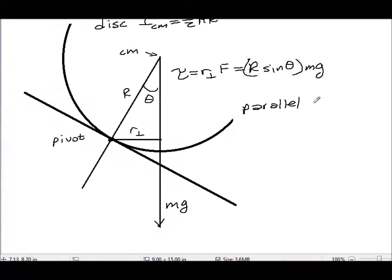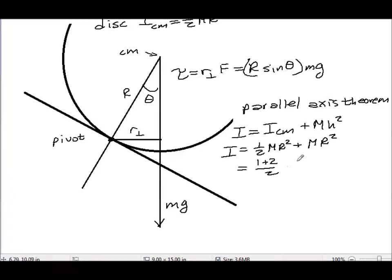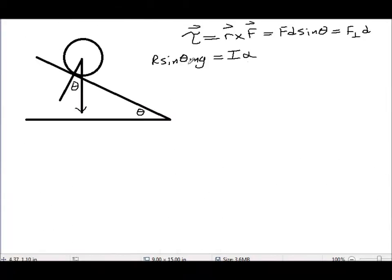The parallel axis theorem is I about some point parallel to your center of mass equals it around the center of mass plus m h squared, which is the parallel distance to the center of mass. Since these two are parallel, that distance h is actually R. So I equals one half m r squared plus m r squared, which becomes two halves m r squared. So one half plus two halves equals three halves m r squared. It'd be kind of nice to know the acceleration of the center of mass down this ramp.